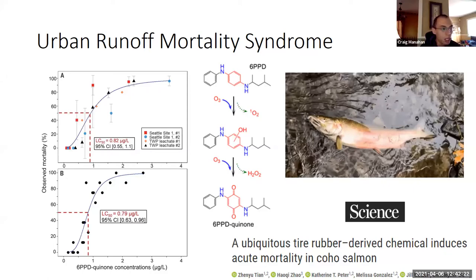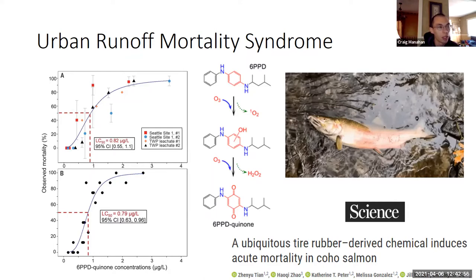6-PPD is an anti-degradant used in automobile tires, and when it is exposed to ozone, the quinone form is produced — you can see that reaction in the middle there. This compound alone caused mortality in coho with the same symptoms and an LC50 of about 0.8 micrograms per liter, matching the concentration in stormwater samples and tire leachate which were known to cause URMS with a very similar LC50.